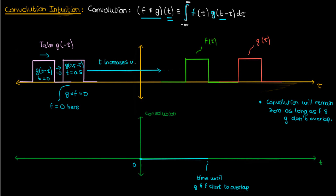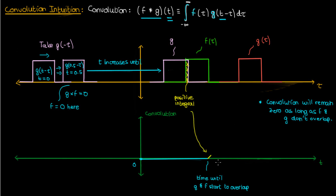But what happens as t increases to a point where g starts to overlap with f? In that case, when you multiply together the portions of g and f that actually overlap, you get a non-zero number, and when you integrate that non-zero number you end up with a positive value. That positive value isn't very large, but it's positive nonetheless, so the convolution of f and g will actually start to creep up as g starts to overlap f. As g continues to sweep across f, the region where g overlaps f increases, and as the overlapping region increases, the convolution integral increases until g and f completely overlap each other.